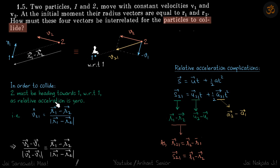As relative acceleration is zero, we write the condition that v₂₁ must be towards 1. This vector must be parallel to this vector, so their unit vectors must be the same.